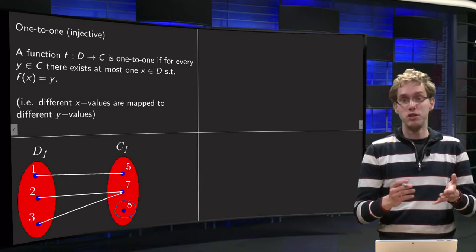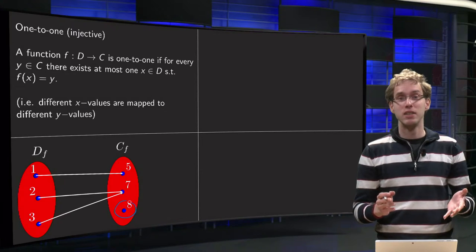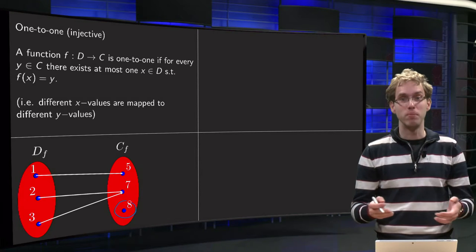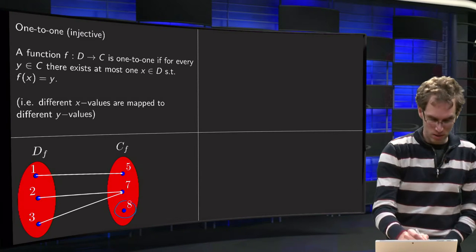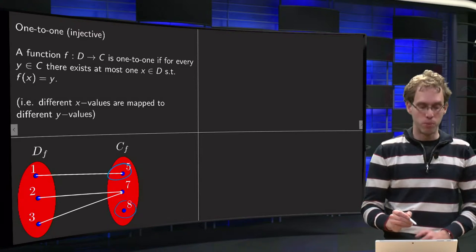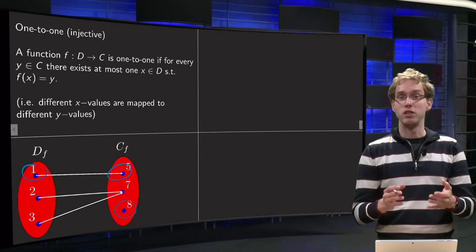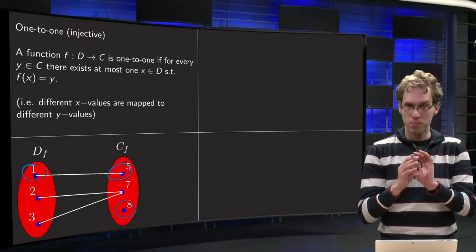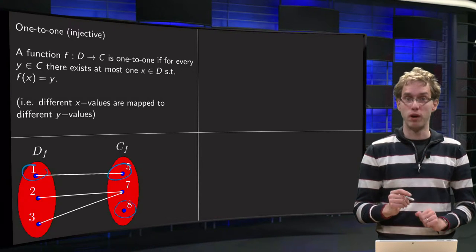The eight, well there is no point mapped to the eight. So you can have at most one x mapped to the eight. There is no point mapped to the eight, so that's fine. Look at the five. One is mapped to five, but that's all. So there is at most one point mapped to five, which is the point one, so that part is also fine for one-to-one.